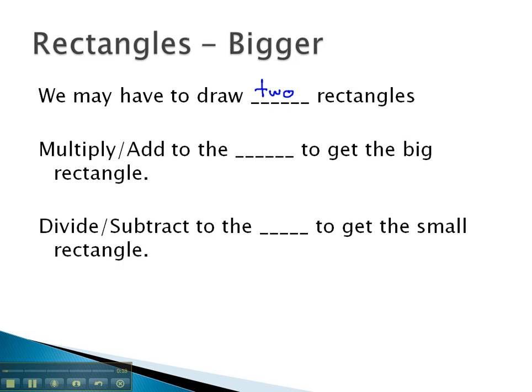As a general rule, we want to multiply or add to the small rectangle, which will make it bigger and equal to the big rectangle. If we are dividing or subtracting, we will do this to the big rectangle, which will make it smaller or equal to the small rectangle.